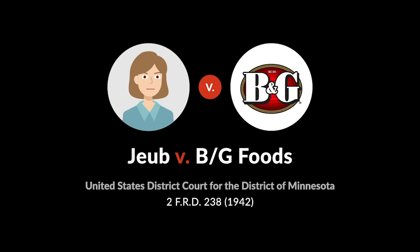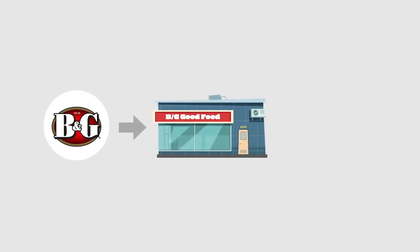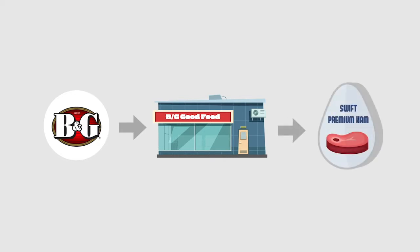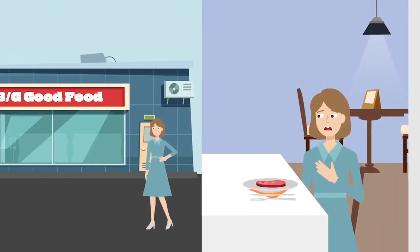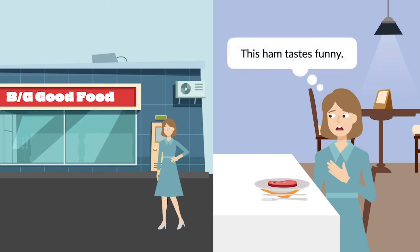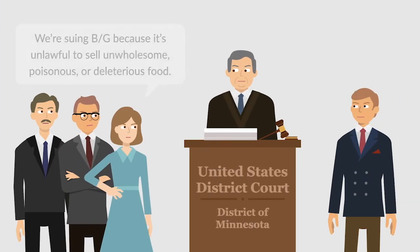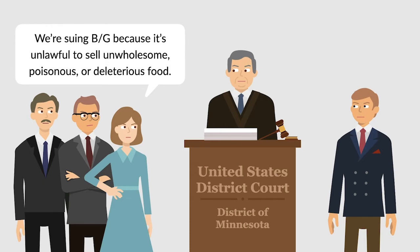In Jube v. BG Foods, the court considered whether a restaurant being sued for food poisoning could implead the company that made the bad ham. BG Foods operated several restaurants. Among its food supplies was Swift Premium Ham, sold in a sealed can by Swift & Company. Jube went to a BG Foods restaurant and ordered this ham. Unfortunately, the ham was contaminated, and Jube got food poisoning. Jube and several other poisoned plaintiffs sued BG Foods under a Minnesota statute, making it unlawful to sell unwholesome, poisonous, or deleterious food.